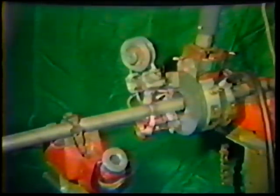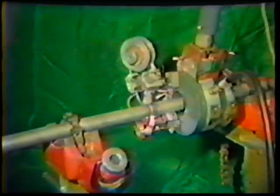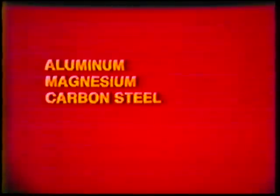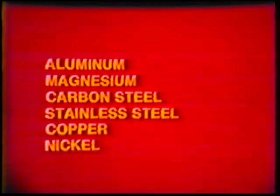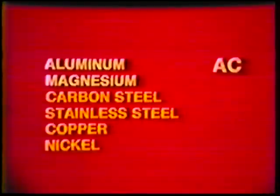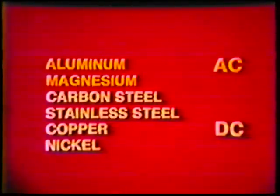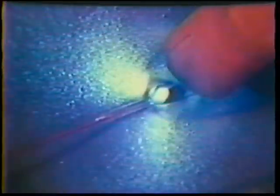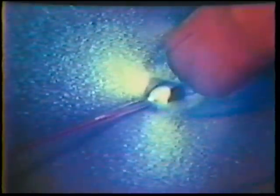The gas tungsten arc process can be used to produce top-quality welds on almost all metals, including aluminum, magnesium, carbon steel, stainless steel, copper, nickel, and other metals. The type of base metal will determine the type of current to be used. Alternating current is used mainly for welding aluminum and magnesium, while direct current is commonly used for steels, stainless steel, coppers, and nickels. Since filler metal does not cross the arc, there is no spatter. As with all gas-shielded welding, the welding area is clearly visible and cleaning of the bead is minimal compared to other processes. The degree of skill required is somewhat high, since it is necessary to feed filler metal into the puddle and a short arc length must be maintained.